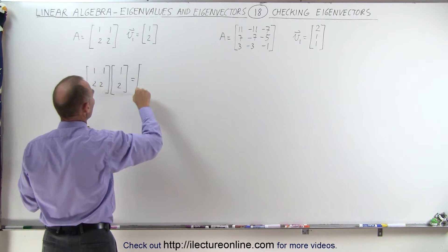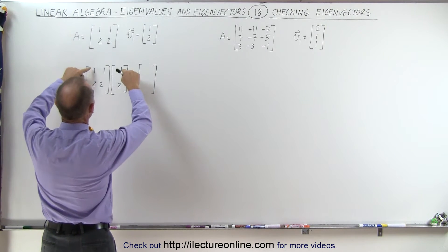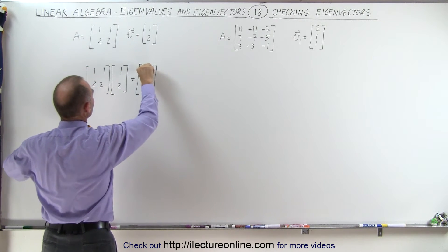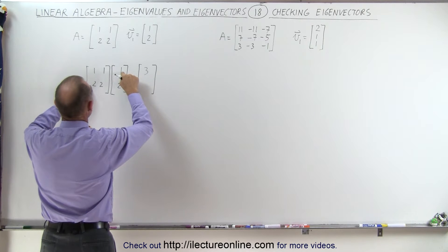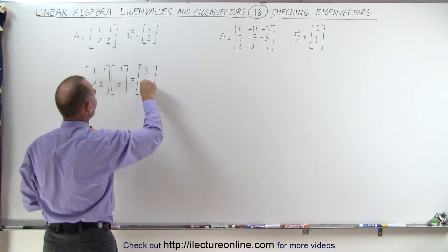So we should get a 2 by 1 matrix, 2 rows 1 column. We have 1 times 1 plus 1 times 2 is 3, and we have 2 times 1 plus 2 times 2, that's 2 plus 4 which is 6.